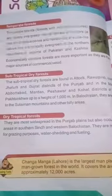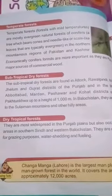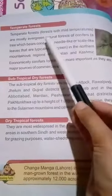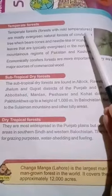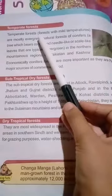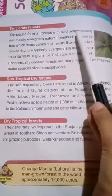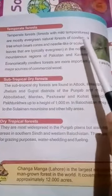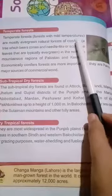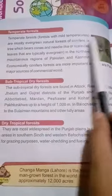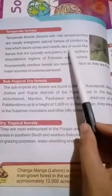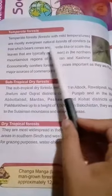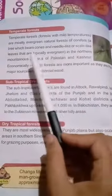Start reading — open your book, page number 34. Temperate Forests are forests with mild temperature, mostly evergreen natural forests of conifers. We call them conifers because they are trees which bear cones and have needle-like and scale-like leaves, and they are typically evergreen.